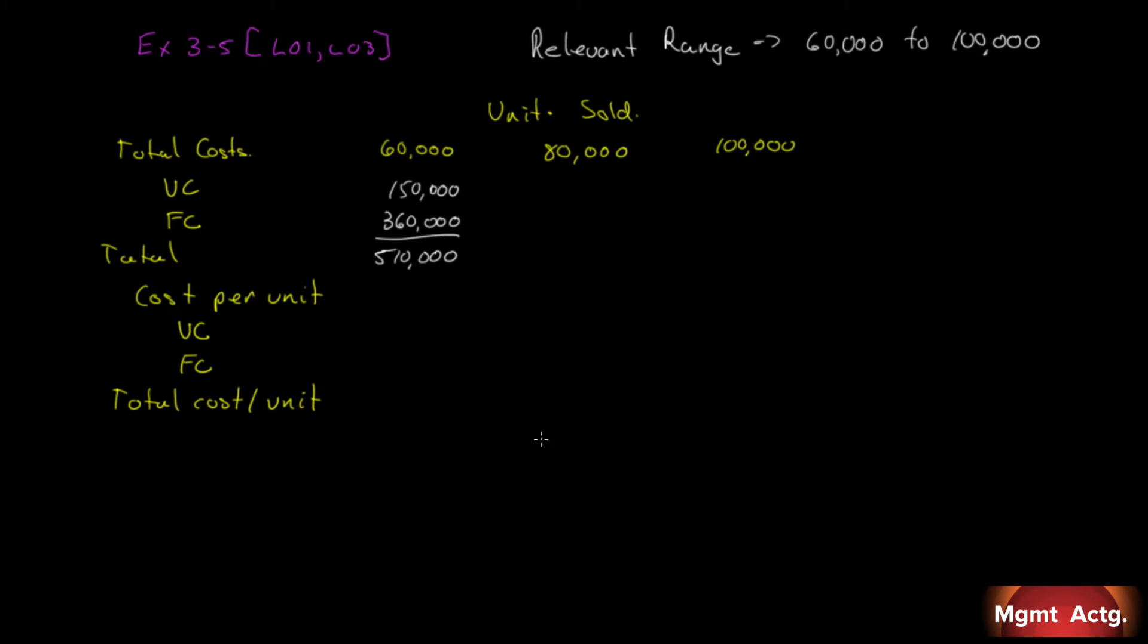Well, the first thing we recognize is our relevant range is from 60,000 to 100,000. The units sold are within that relevant range. Our fixed costs are 360. We're in the relevant range, so we can extend $360,000 out to each of these right away because we're in the relevant range.